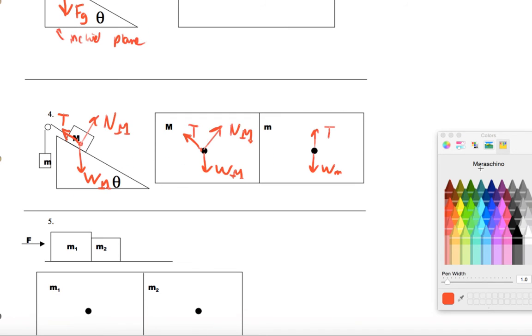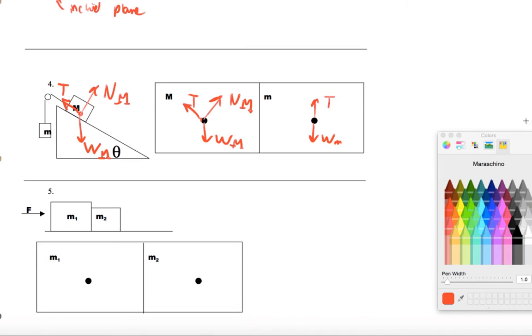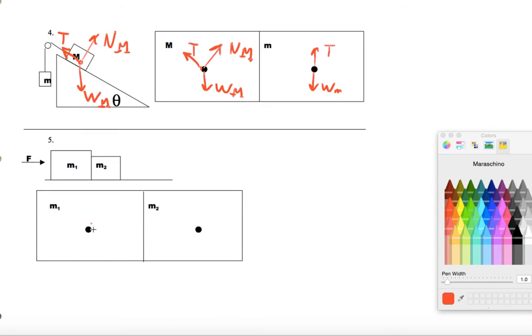Finally, for the last one, this is the first one where we're going to actually see third law pairs. So, I'll have, let me just label this carefully. So, I'm going to have the weight on mass 1, the normal on mass 1 pushing it up. I'm going to have a force to the right.